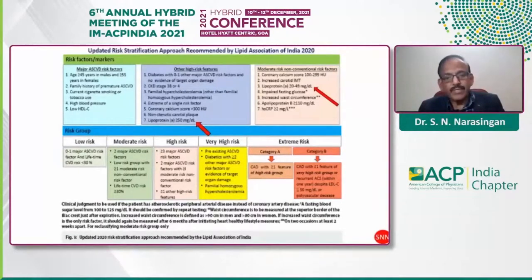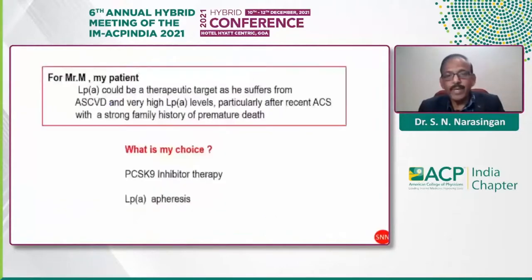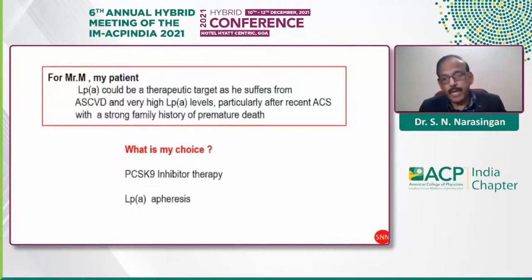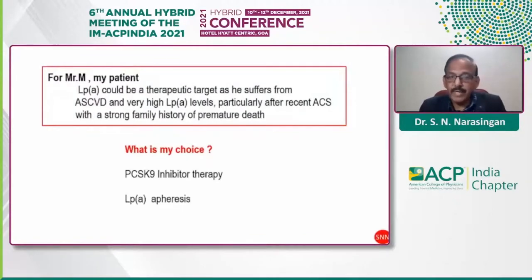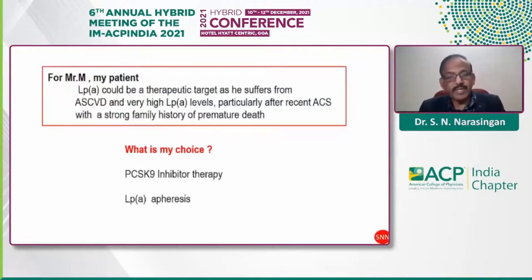Returning to my patient's problems: he has reached an LDL cholesterol level of 98 mg/dL, which does not touch the goal, and his lipoprotein(a) is 180 mg. Based on the ODYSSEY OUTCOMES data with alirocumab and the FOURIER data with evolocumab, for my patient Mr. M, I would probably target Lp(a) as a therapeutic target given his ASCVD, very high Lp(a), and strong family history. My choice would be a PCSK9 inhibitor, but he cannot afford it. LDL apheresis could be attempted, though it is not available in my city.